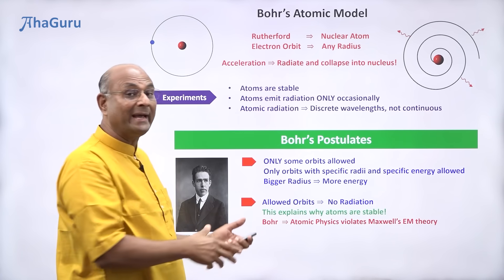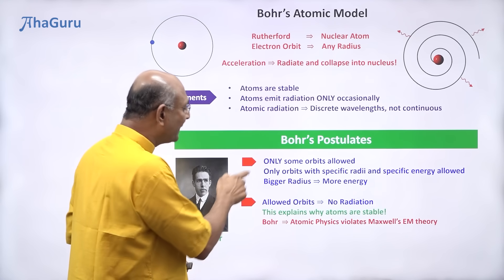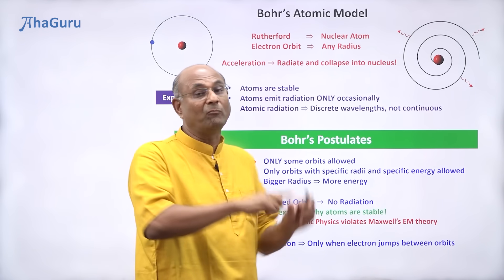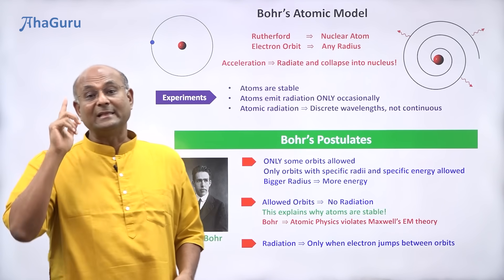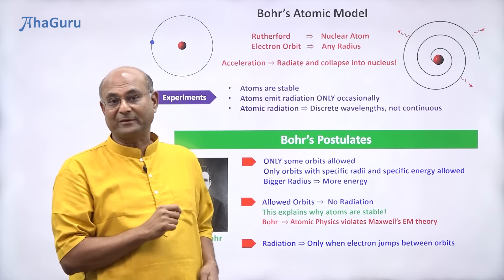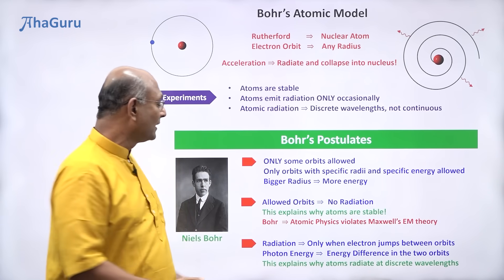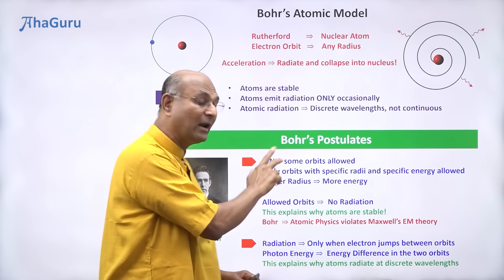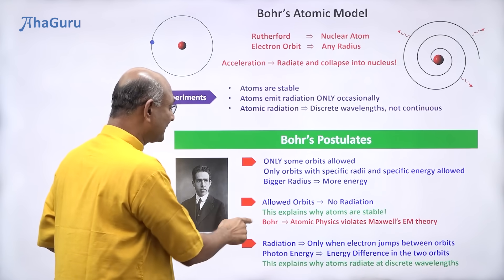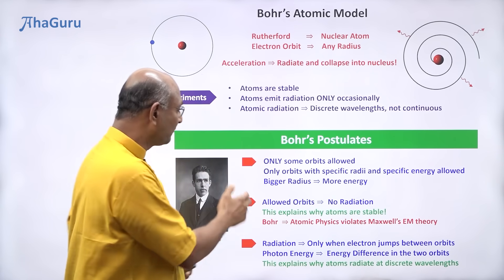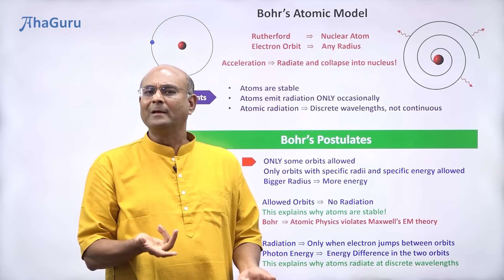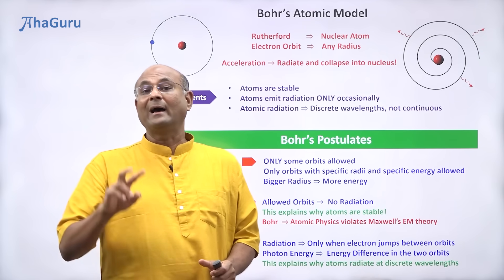But atoms do emit radiation — you can't say there is no radiation at all. In the allowed orbits there is no radiation, so when will they radiate? Atoms will radiate only when the electron jumps from one orbit to another orbit. When they jump between orbits, then there is radiation; but when they are in an allowed orbit, there is no radiation. The energy of the photon that comes out will be equal to the energy difference between these two allowed orbits. This brilliantly explains why atoms radiate at discrete wavelengths — because there are discrete orbits with discrete energies, atoms will radiate at discrete wavelengths.